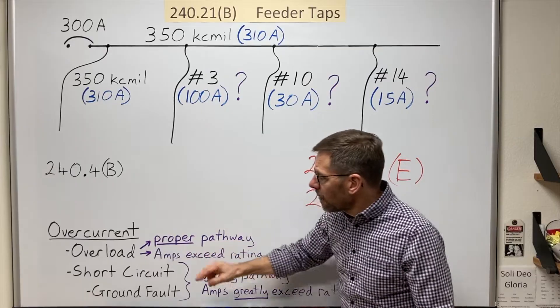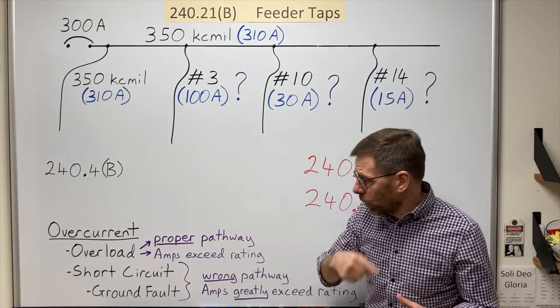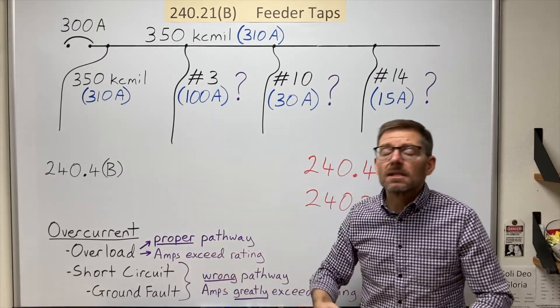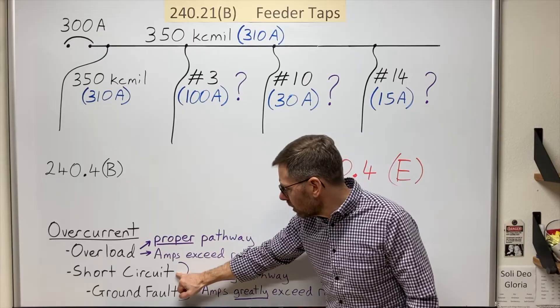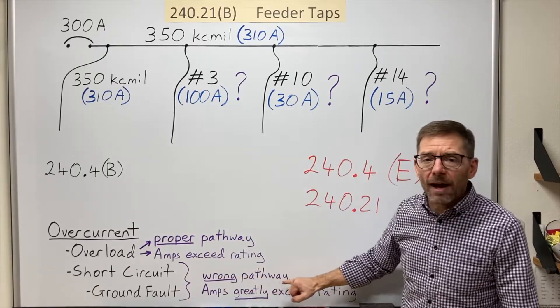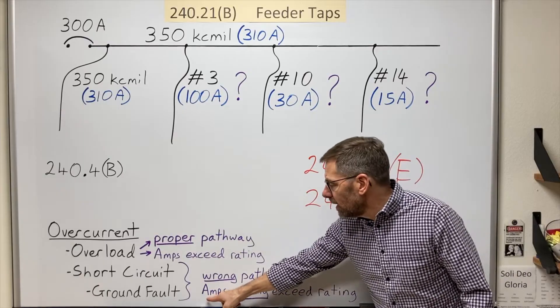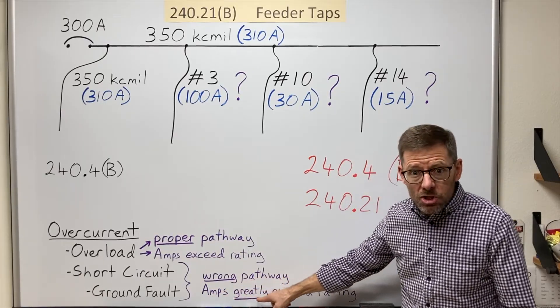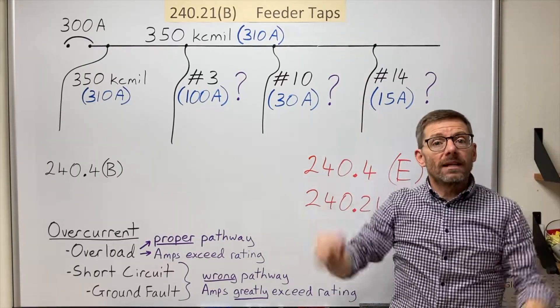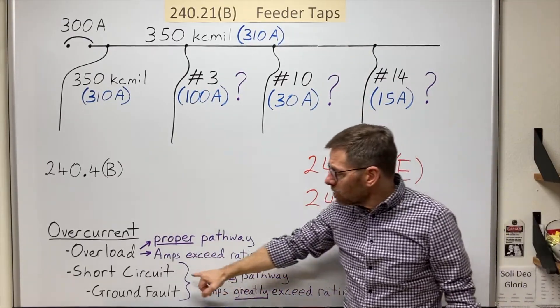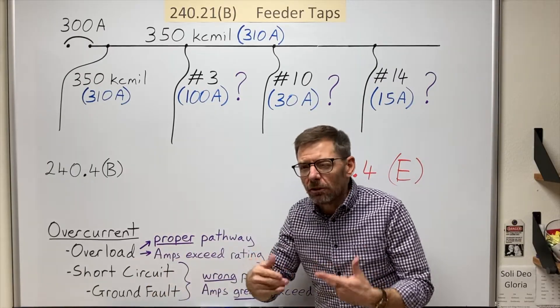But quick reminder, the overload flows in the proper pathway. It's just that the amps exceed the rating. Whereas a short circuit flows in the wrong pathway. It's taken a shortcut. And also the current on a short circuit generally greatly exceeds the ratings. So there's normally a much higher current on a short circuit than an overload.